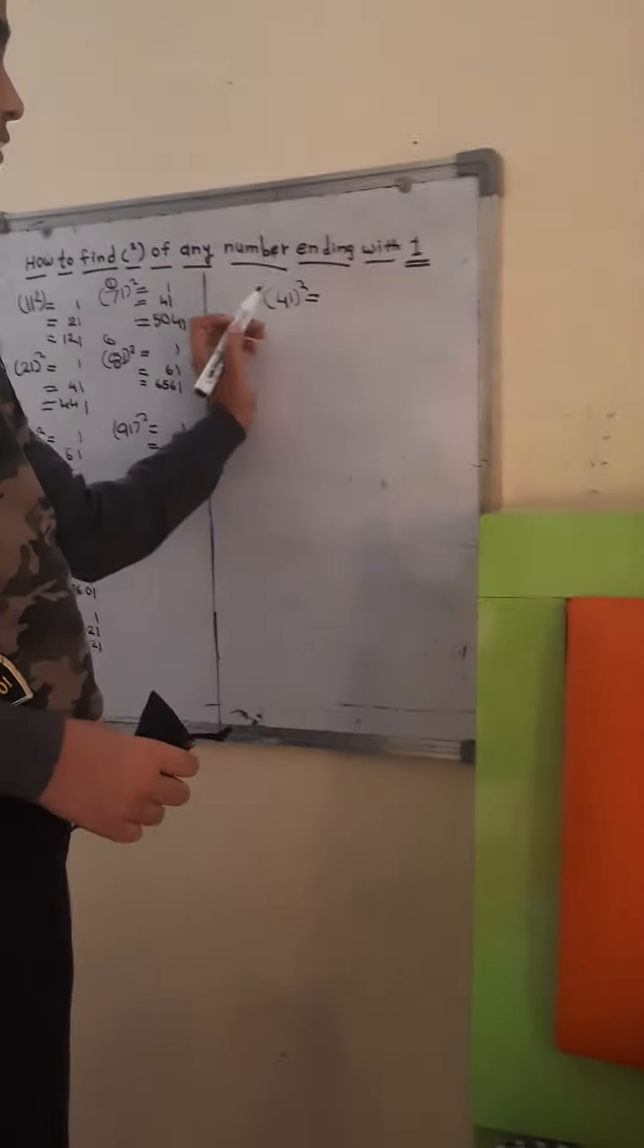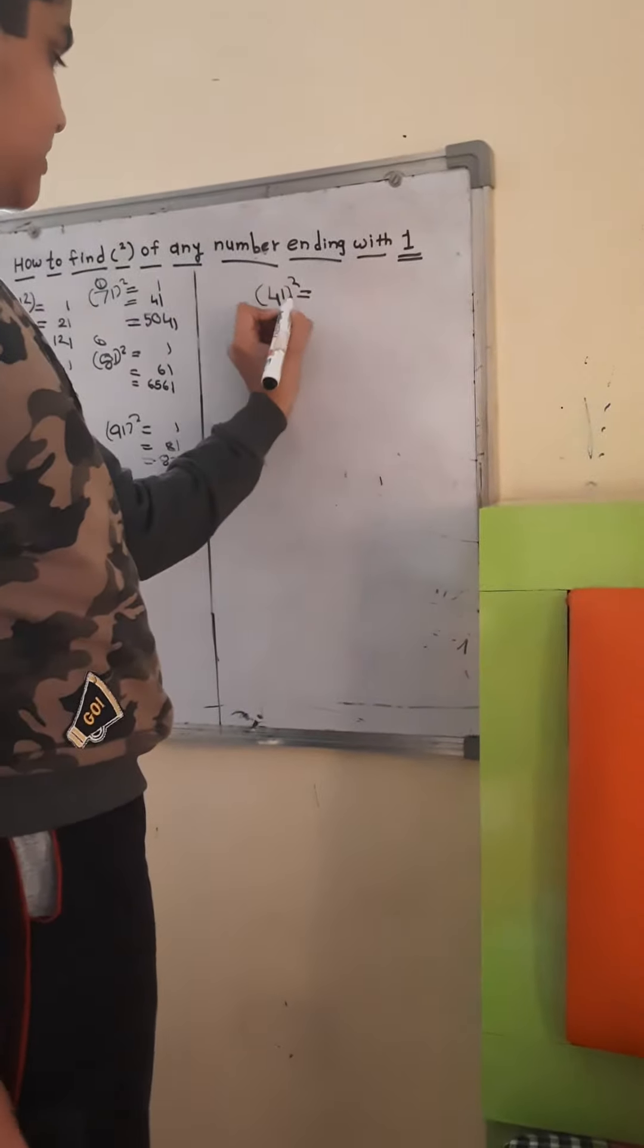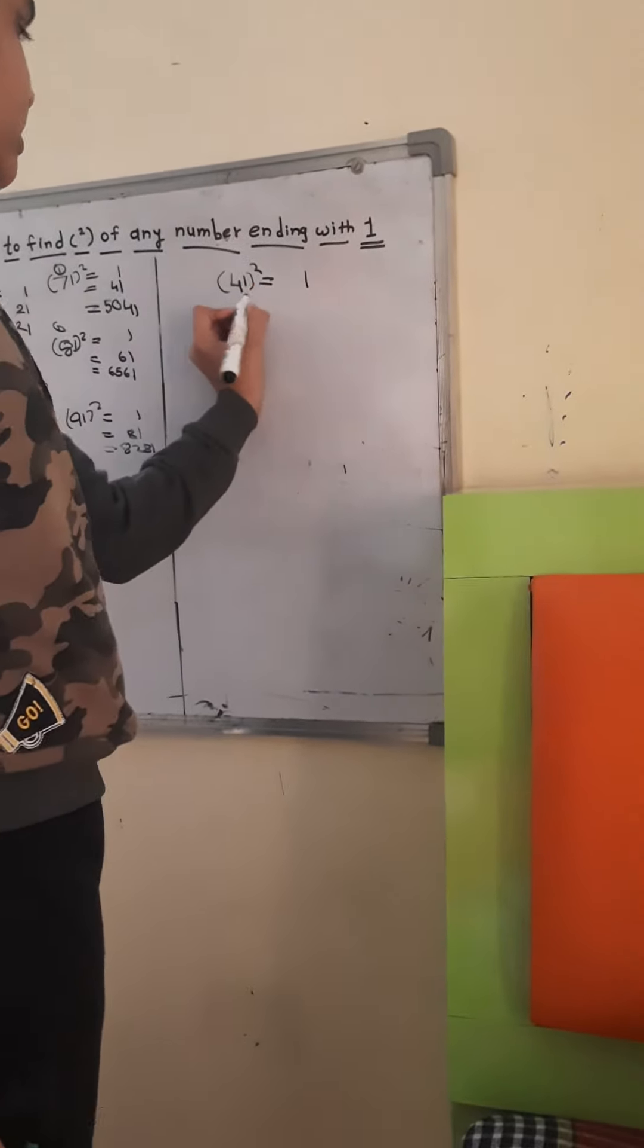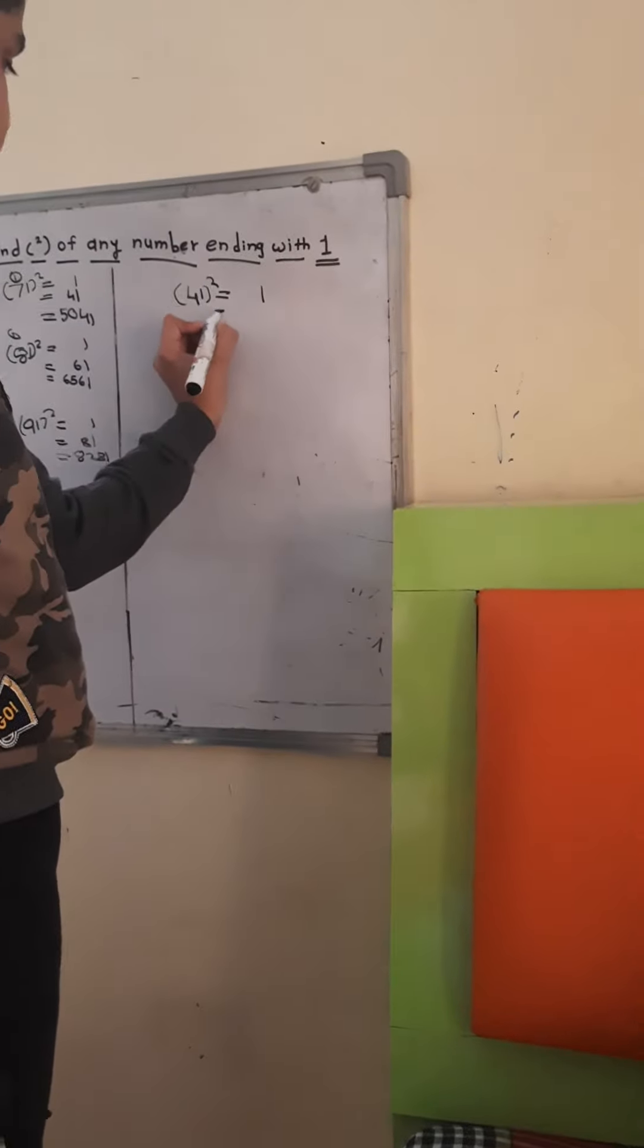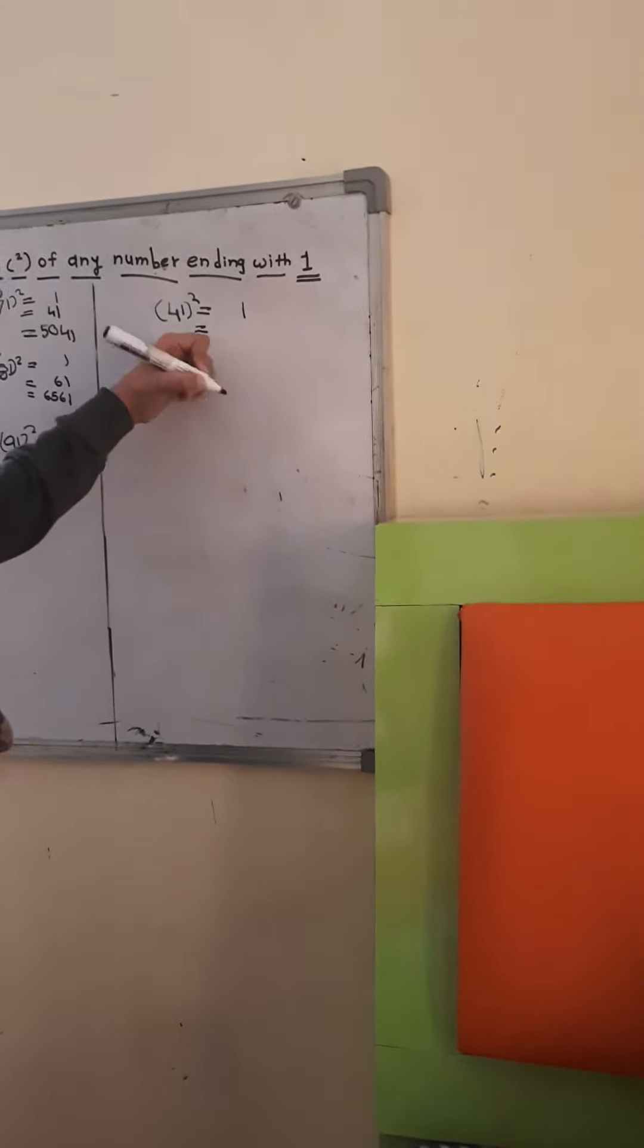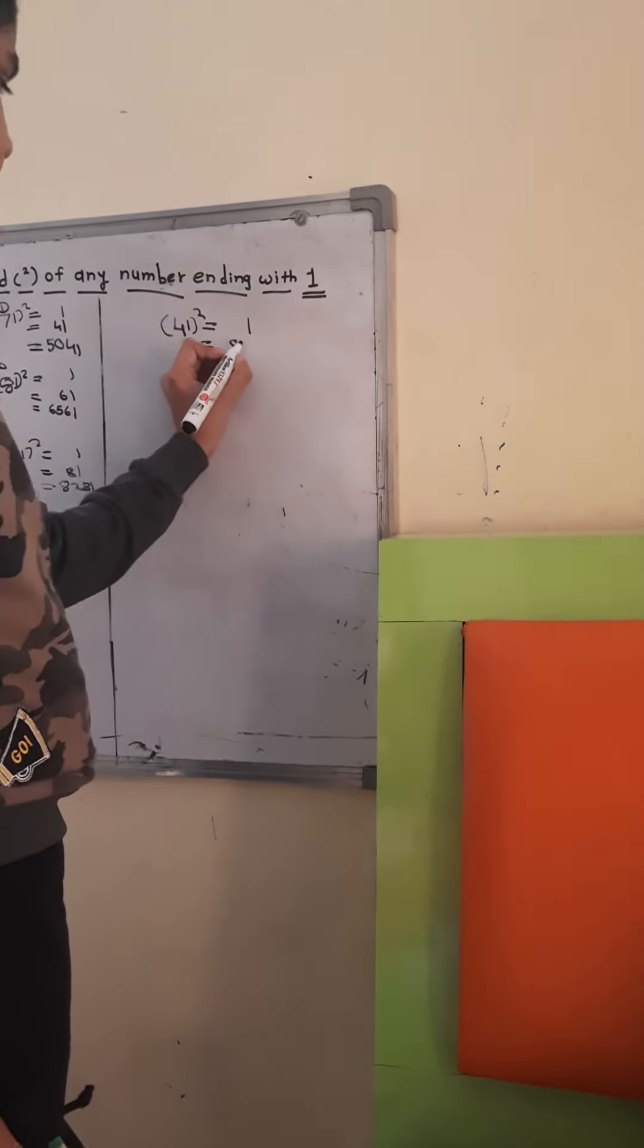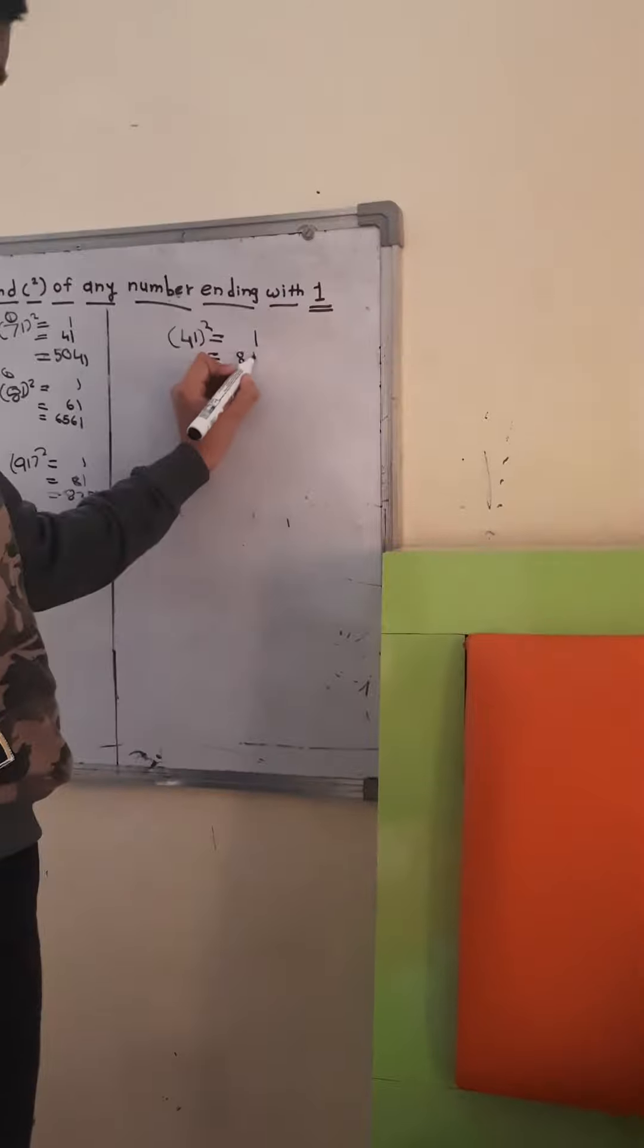As you can see, I've wrote 41 here. So, when we have to take this 1 over here, and then we have to put an equal to sign, and then we have to find the 2 times of 4, which is 81, no 8, and then 1 here.